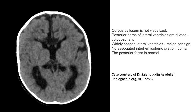This is the second case of a head CT scan. The corpus callosum is not visualized in this image. Gyral configuration of the lateral ventricles is not related to the corpus callosum. Widely spaced lateral ventricles raise concerns. No associated inter-hemispheric cysts or lipoma. The posterior corpus callosum is absent.